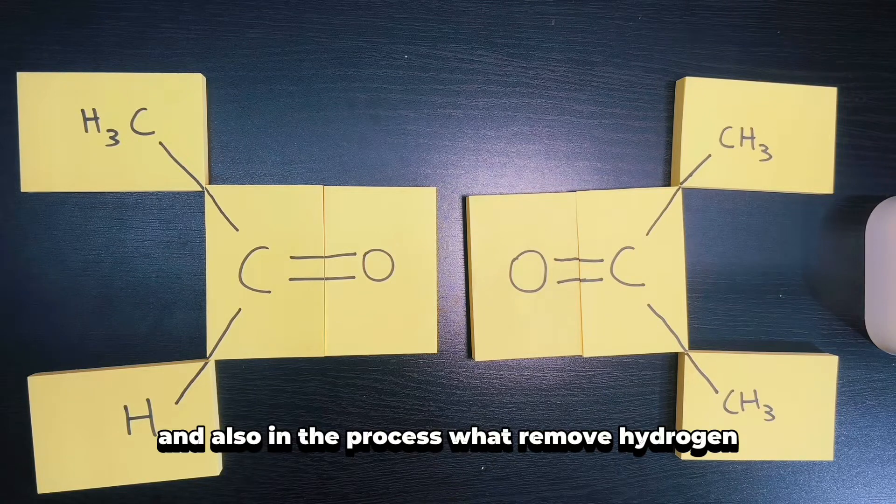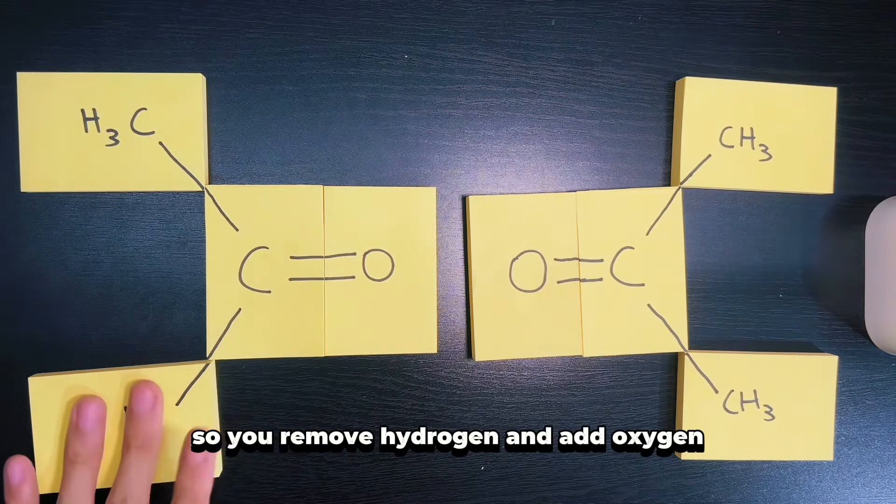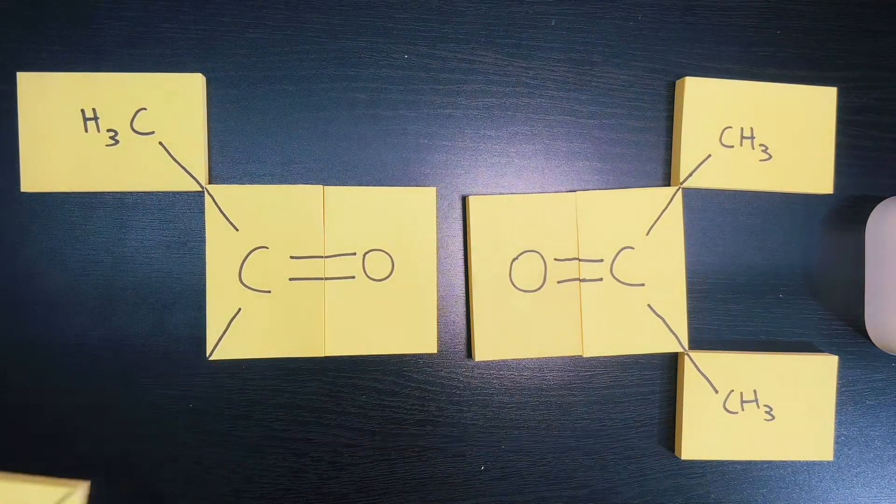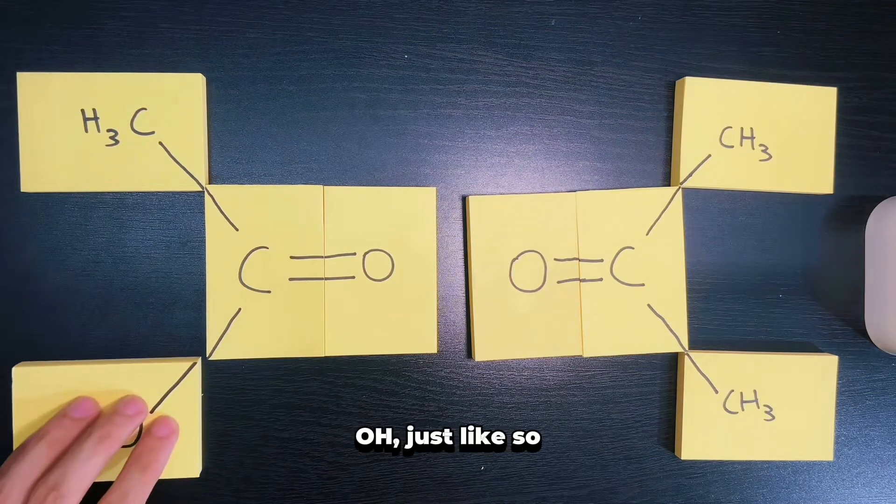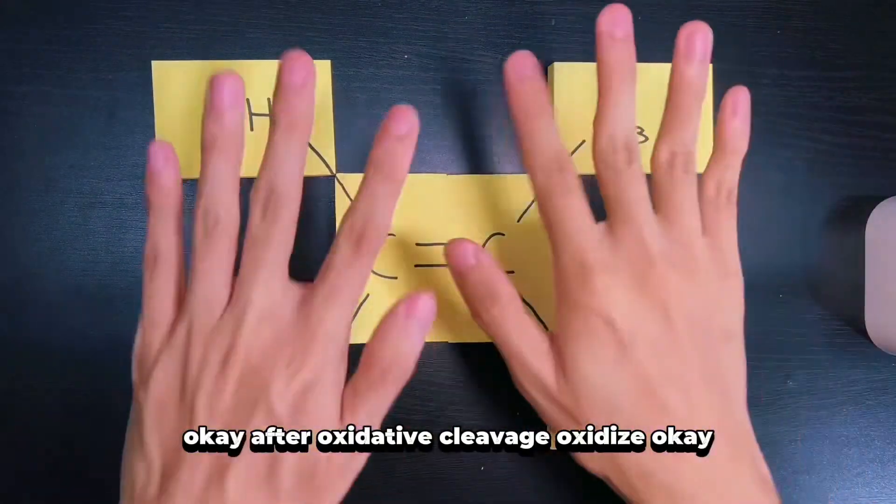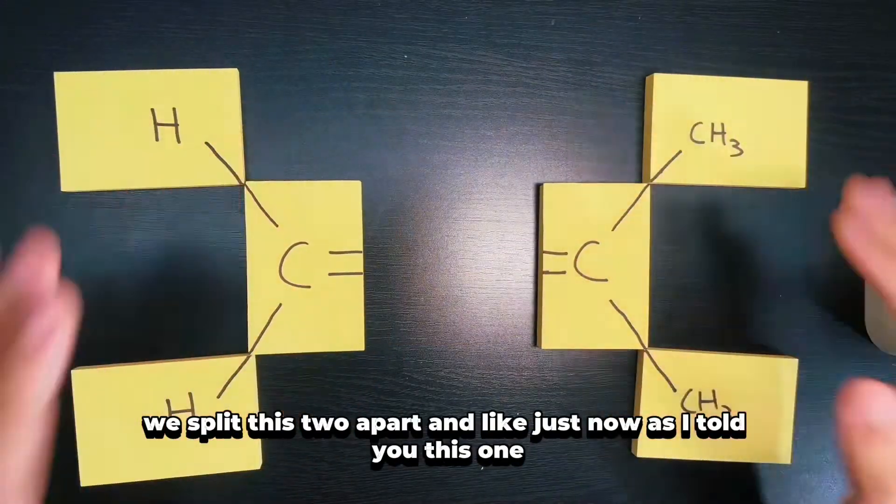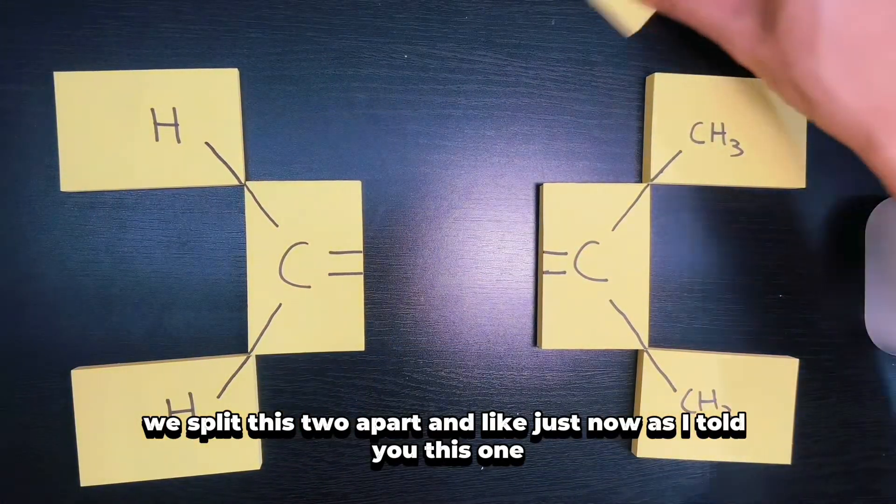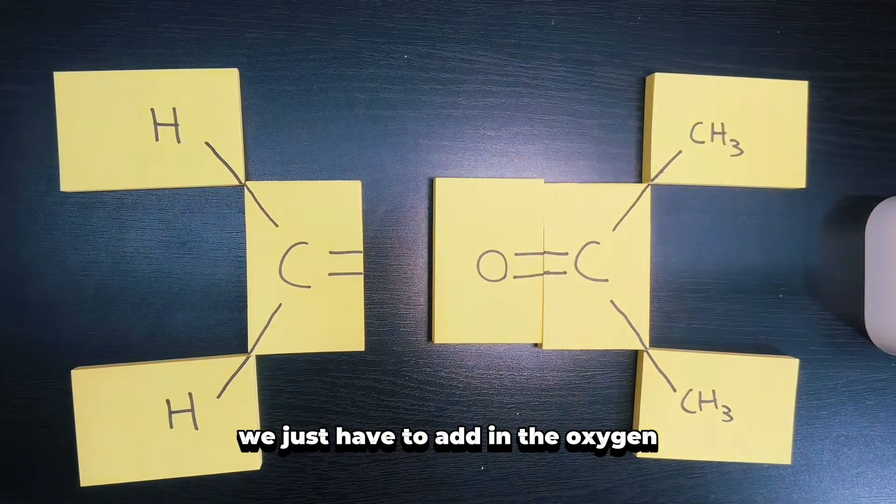In the process you remove hydrogen and add oxygen. After oxidative cleavage, we split these two apart. We just have to add in the oxygen to the carbon atom over here.